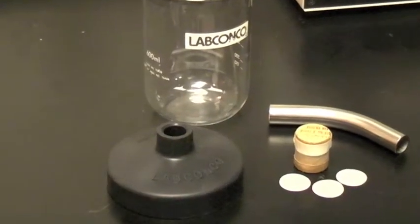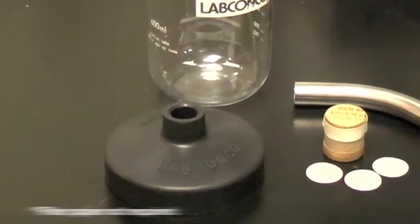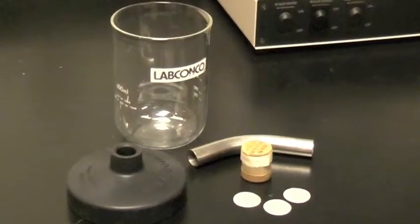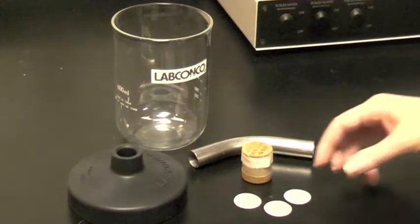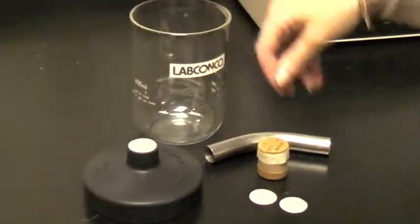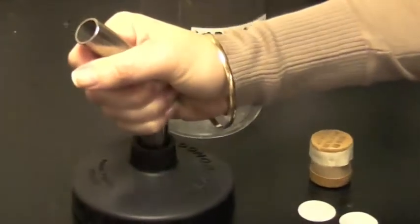To install an adapter and filter paper on a fast freeze flask, place the black rubber flask lid on a flat surface. Place a piece of filter paper over the opening of the lid, then push the paper into the lid using the adapter.